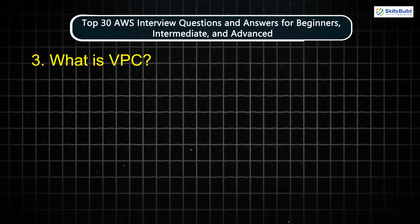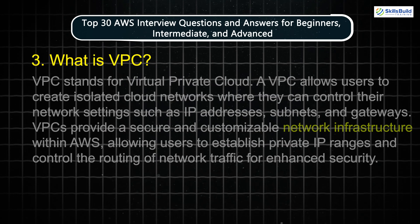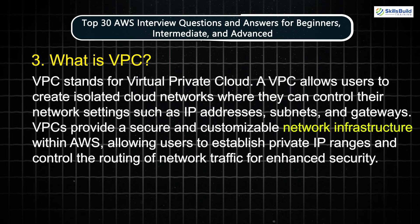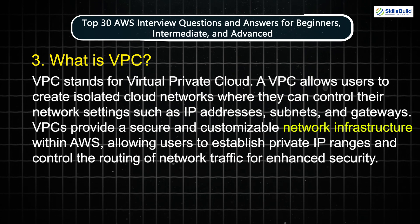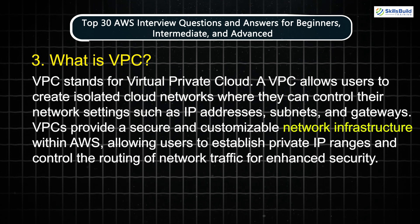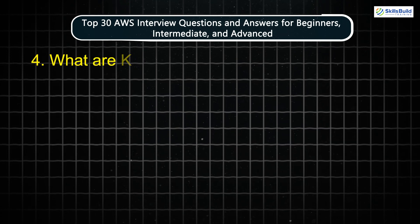Question 3: What is VPC? VPC stands for Virtual Private Cloud. A VPC allows users to create isolated cloud networks where they can control their network settings, such as IP addresses, subnets, and gateways. VPCs provide a secure and customizable network infrastructure within AWS, allowing users to establish private IP ranges and control the routing of network traffic for enhanced security.